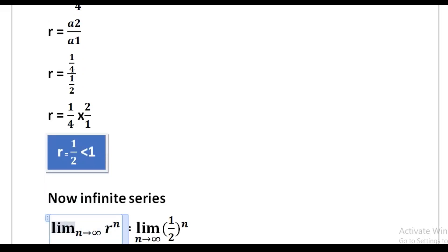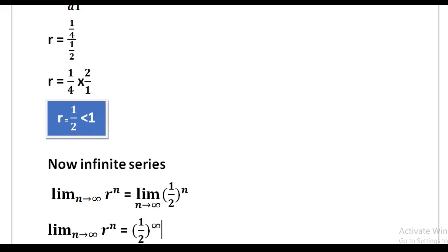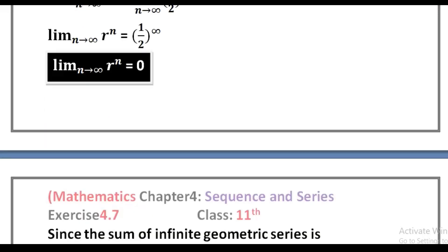Now for an infinite series, the limit as n approaches infinity of r^n equals the limit as n approaches infinity of (1/2)^n. By applying the limit, (1/2)^infinity equals 0. So the limit as n approaches infinity of r^n is equal to 0.